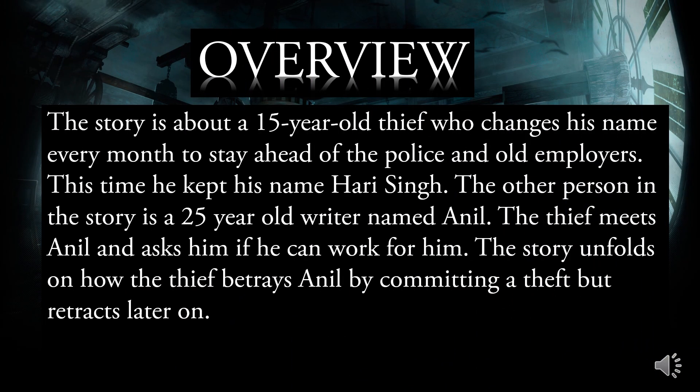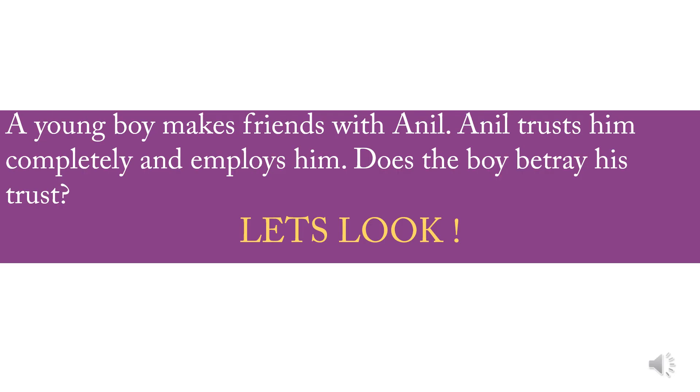Overview: The story is about a 15-year-old thief who changes his name every month to stay ahead of police and old employers. This time, he kept his name Hari Singh. The other person in the story is a 25-year-old writer named Anil. The thief meets Anil and asks him if he can work for him. The story unfolds on how the thief betrays Anil by committing a theft but retracts later on. A young boy makes friends with Anil, who trusts him completely and employs him.